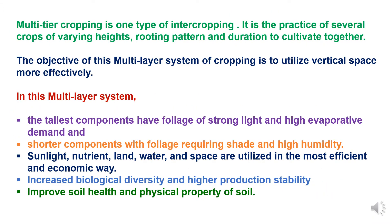Multi-tier cropping system is a type of intercropping in which various crops are grown simultaneously with a special arrangement. It is the practice of growing several crops of varying heights, varying rooting patterns, growth duration and yielding patterns which are cultivated together. The objective of this multi-layer or multi-tier system of cropping is to utilize vertical space more effectively by a specific arrangement of the crops.